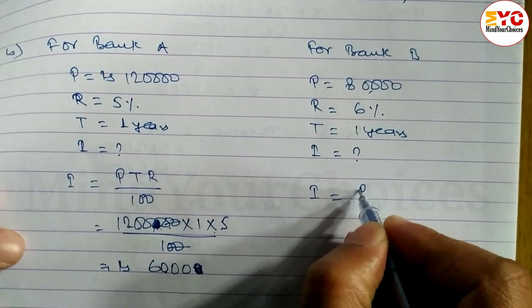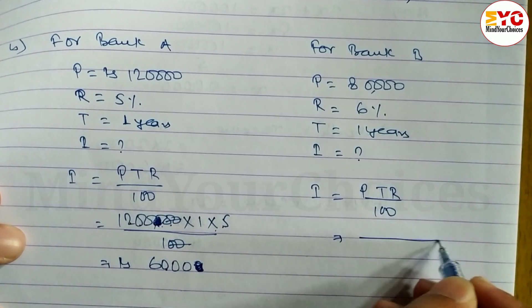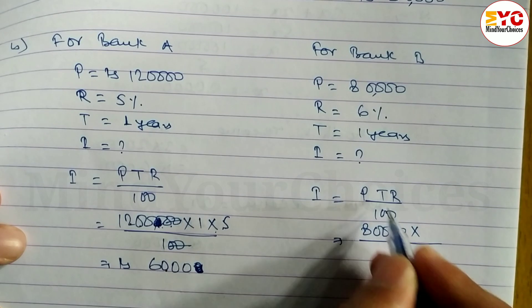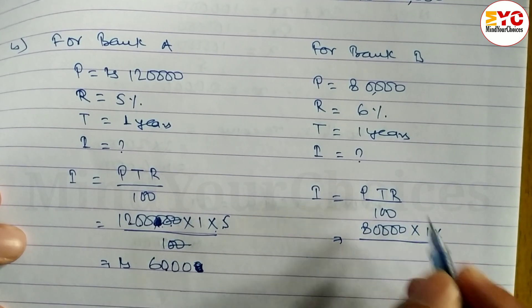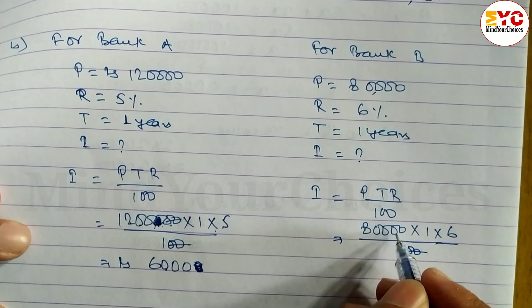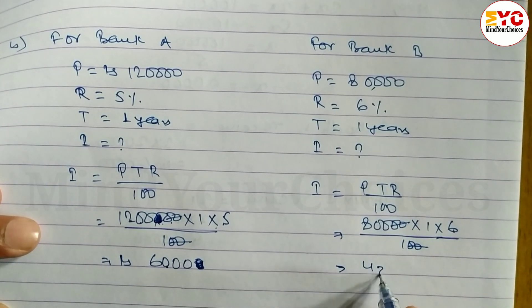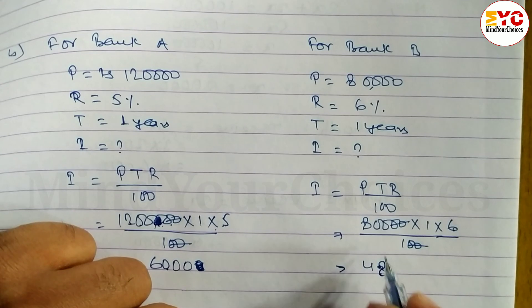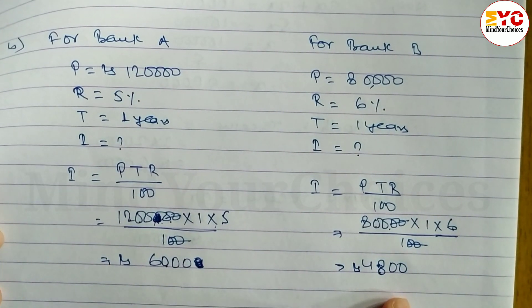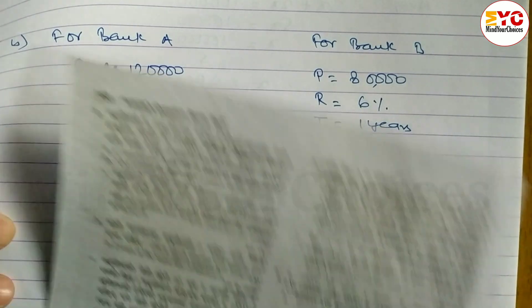Now for bank B, the interest formula is PTR divided by 100. What is the value of P? 80,000. So write 80,000 into time, which equals 1 year, rate of interest is 6%, so 6 divided by 100. 20, 20 cancel, 6, 8, 48. So bank B gives interest of 4,800. Hope you understand this one.